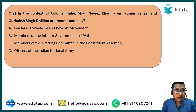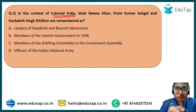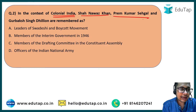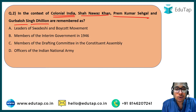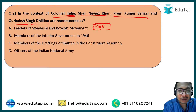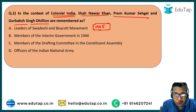Question number two: In the context of colonial India, Shah Nawaz Khan, Prem Kumar Sahgal, and Gurbaksh Singh Dhillon are remembered as what? Option A: leaders of the Swadeshi boycott movement. Option B: members of the interim government in 1946. Option C: members of the drafting committee in the constituent assembly. Option D: officers of the Indian National Army. This question requires direct knowledge — there are very few clues in the options, so we must rely completely on our preparation.